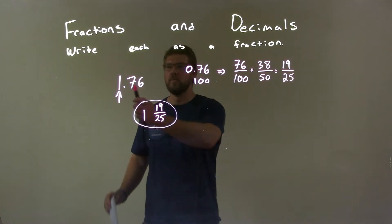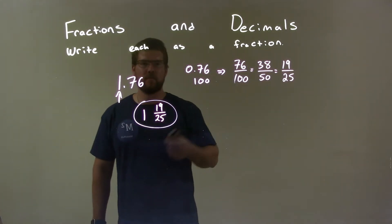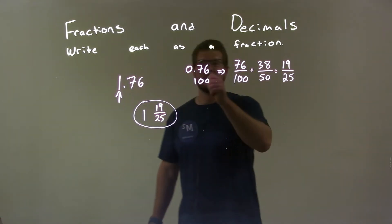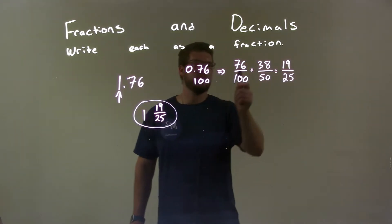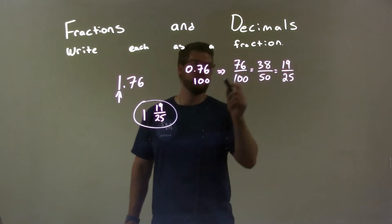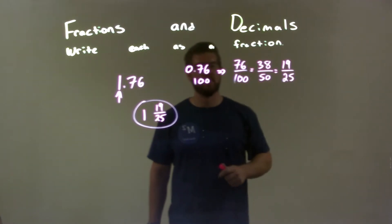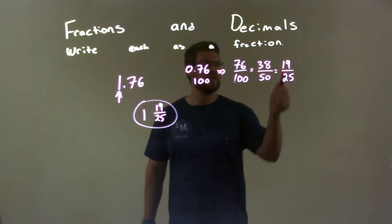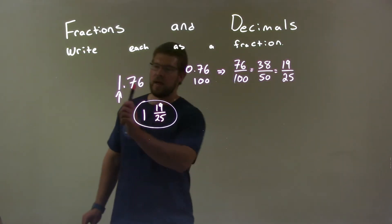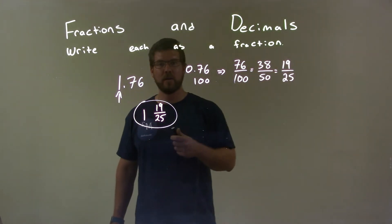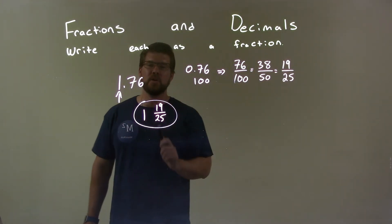So quick recap, we're given 1.76, and we have to write that as a fraction. I took the 0.76 and put it over 100, or using our method, found that they have the same thing as 76 over 100. That's simplified to be 19 over 25. I combined that with this one, and gave us our final answer of 1 and 19 over 25.